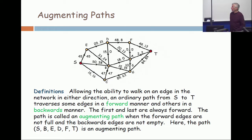A path in a network with a flow on it is called an augmenting path when all the forward edges are not full and all the backwards edges are not empty. And in the current flow, I point out that S, B, E, D, F, T is an augmenting path.